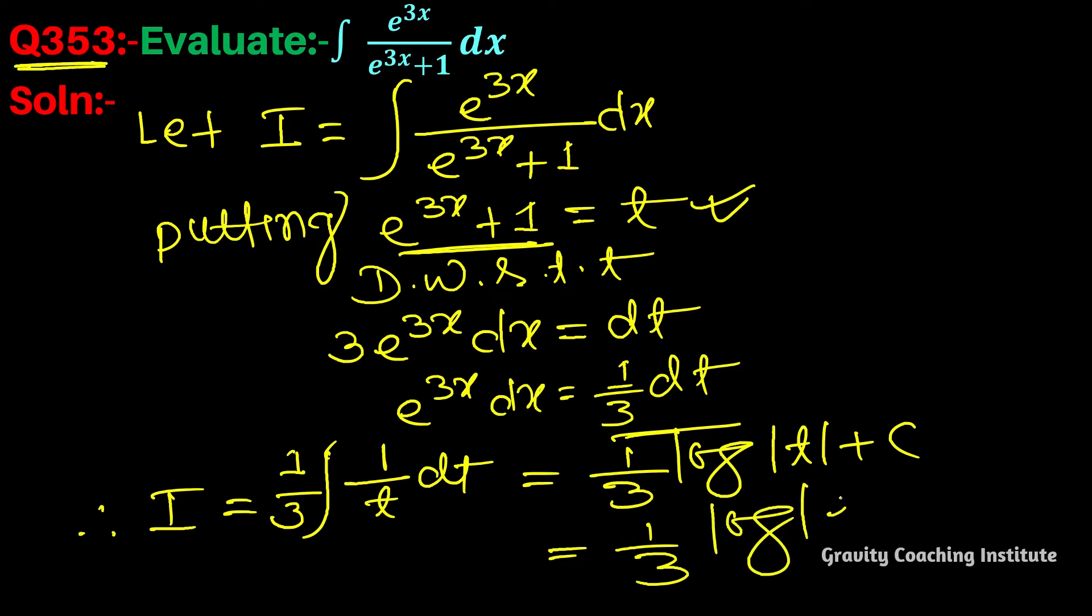Substituting t value e to the power 3x plus 1, we get 1 by 3 log mod e to the power 3x plus 1 plus c. Answer.